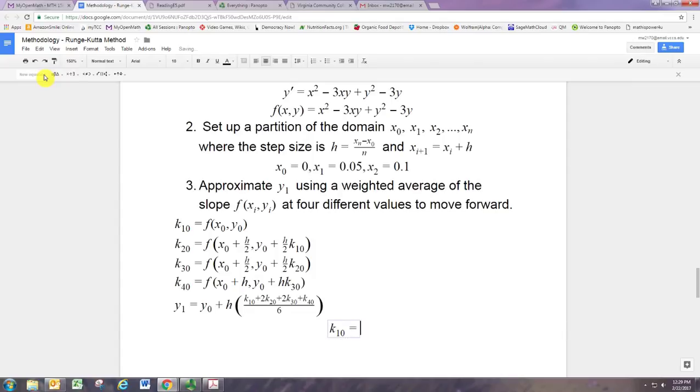So let's see how that looks. K10 is just the slope at the initial condition. So we're going to replace x with 0 and y with 2. And so this is 4 minus 6, which is negative 2. So let's store negative 2 as K10.